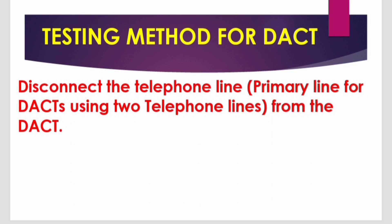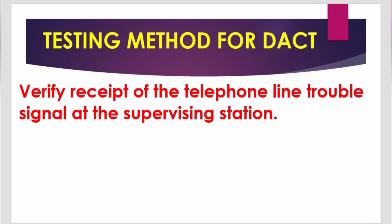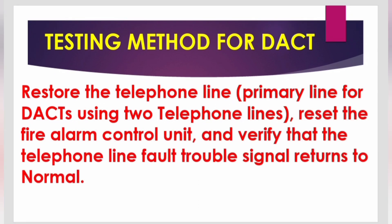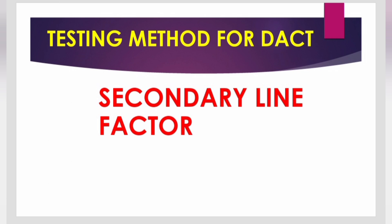For the primary line factor, disconnect the telephone line primary for the DACT. Using two telephone lines, verify the indication of the digital alarm communicator transmitter trouble signal occurs at the premises fire alarm control unit within four minutes of detection of the fault. Verify receipt of the telephone line trouble signal at the supervising station. Restore the telephone line, reset the fire alarm control unit, and verify that the supervising station receives the restoral signal from the communicator.